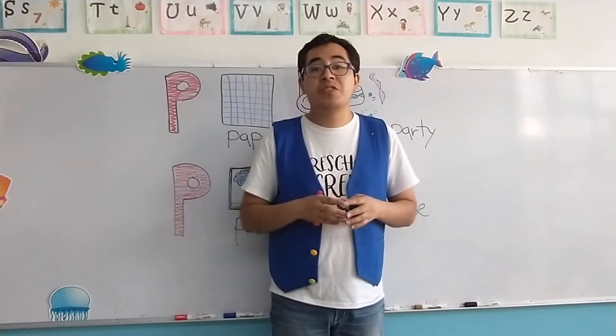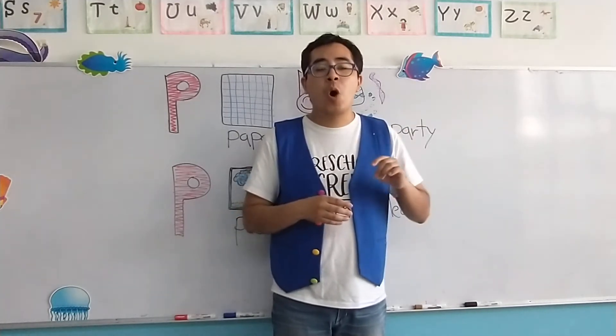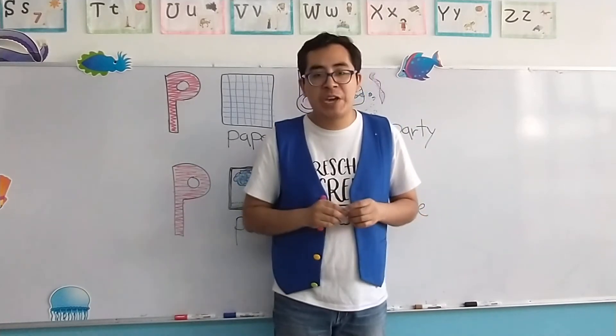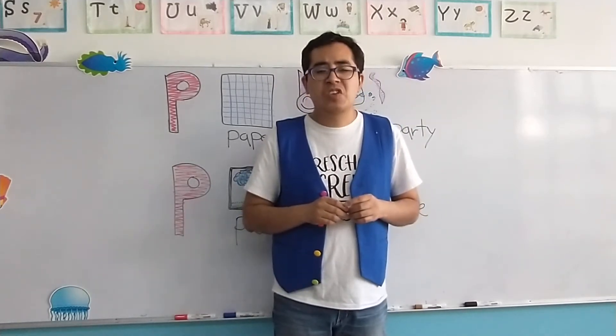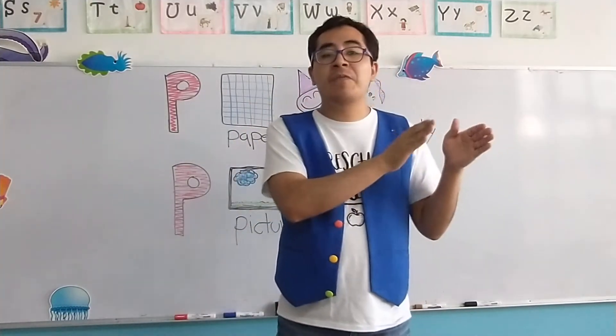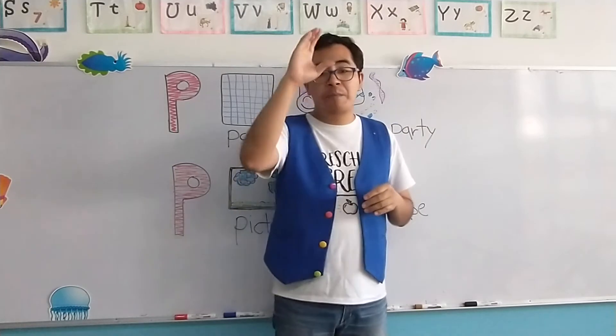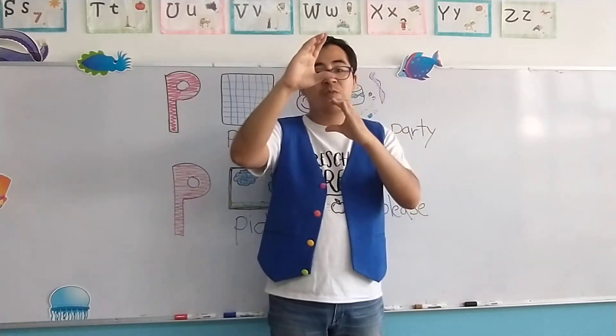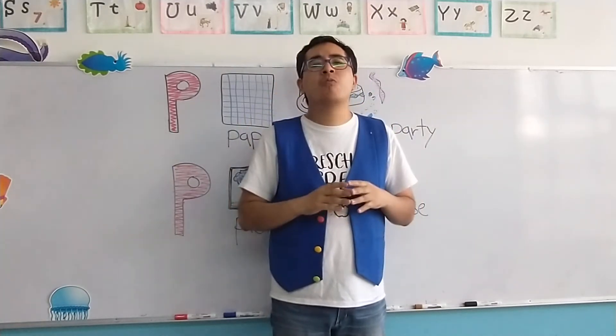And the letter of today, after capital O, small o, is the letter P. Capital P, small p. Now, this letter, as in the case of the letter O, the capital form and the small form have their own shape.